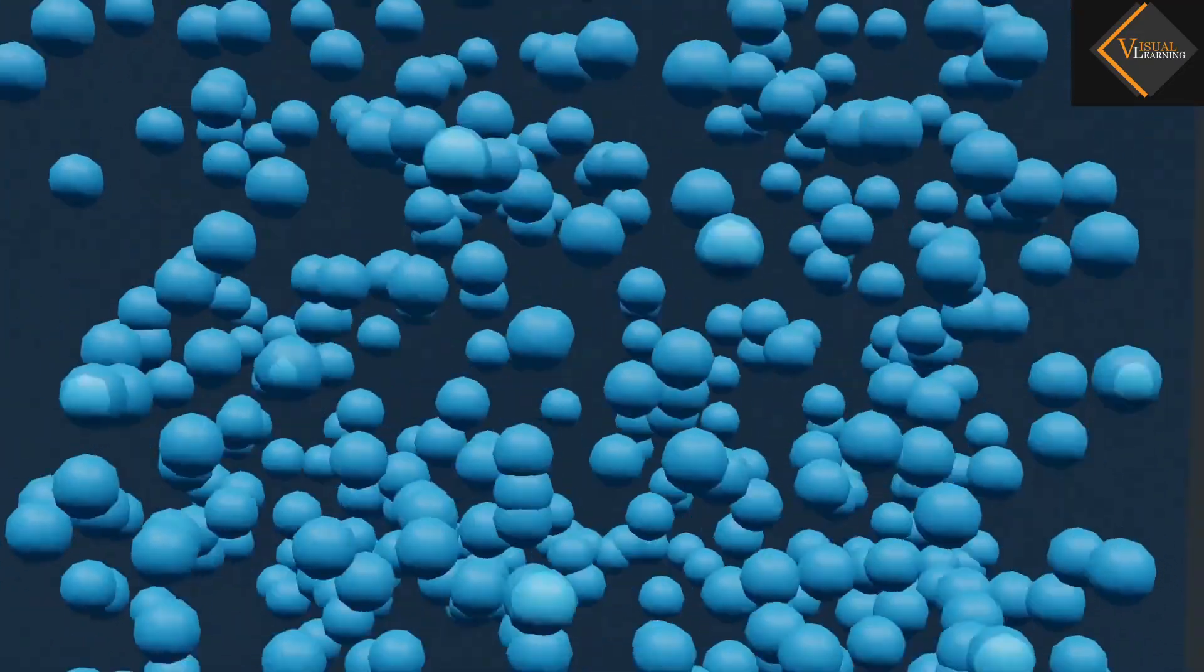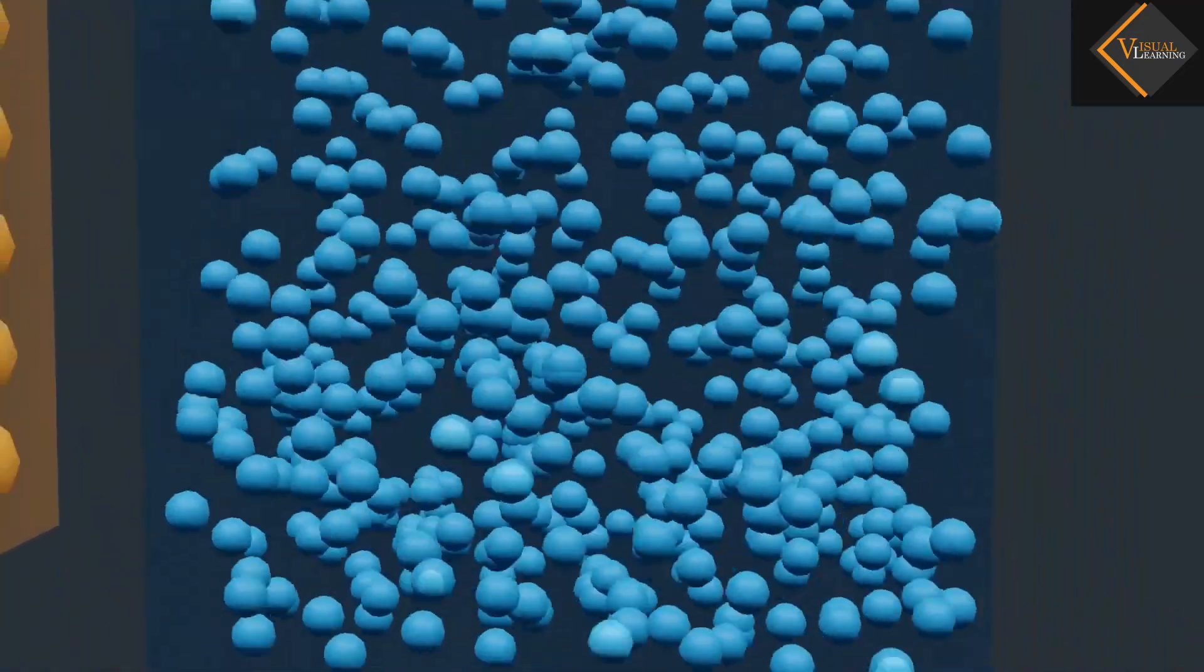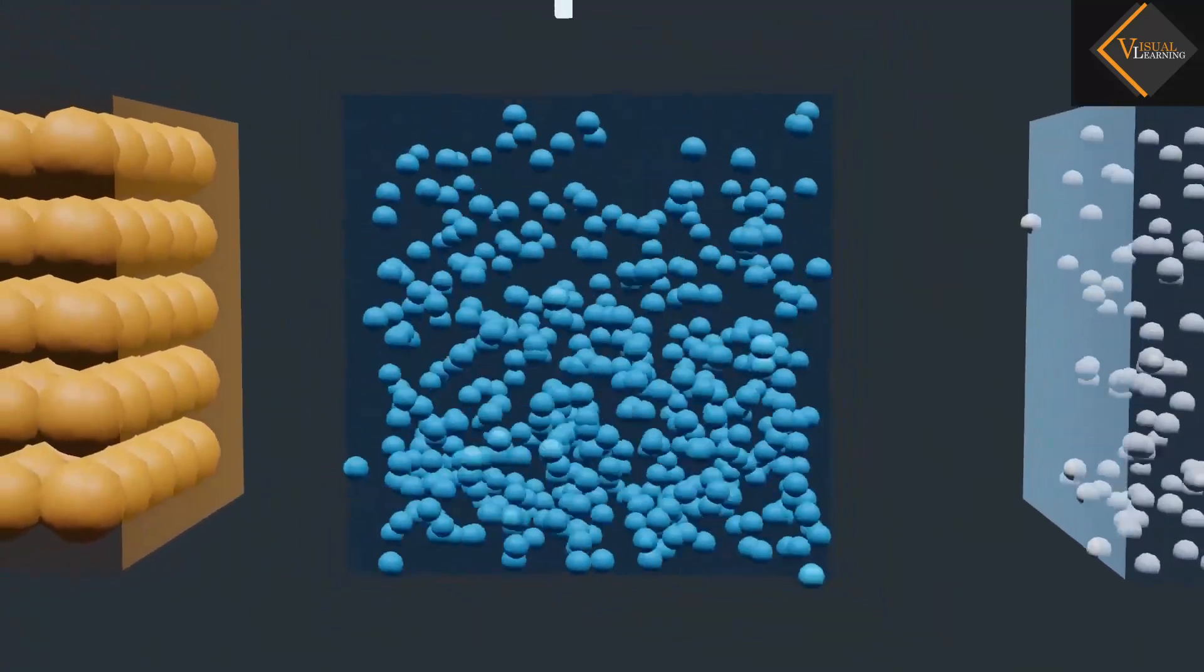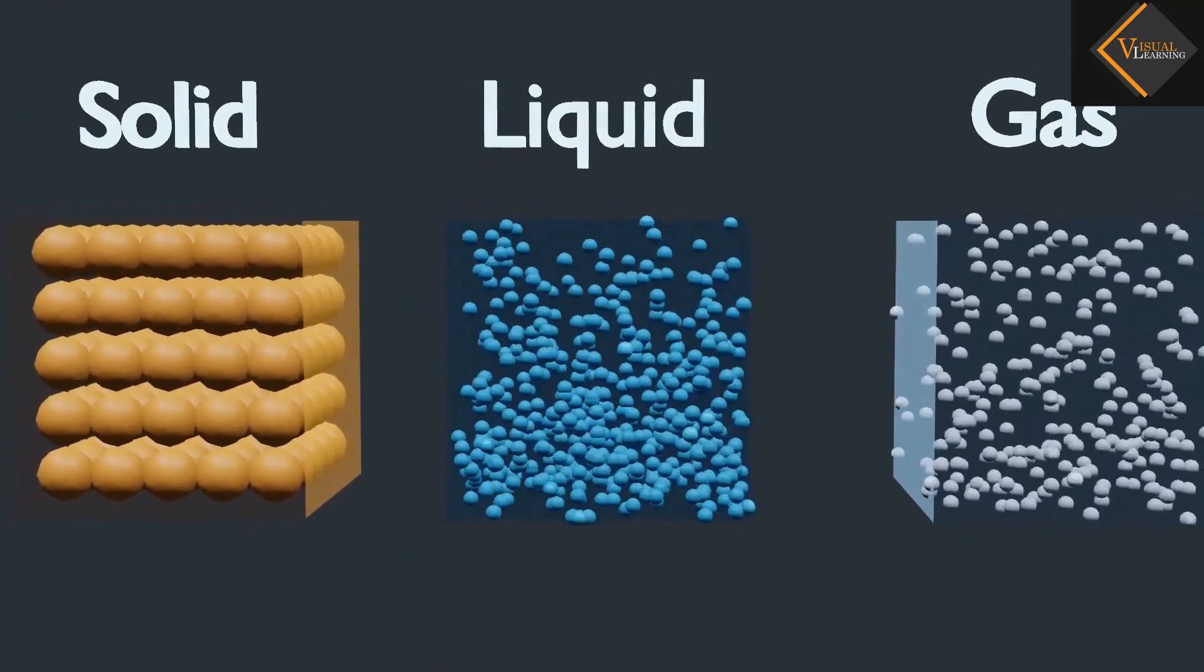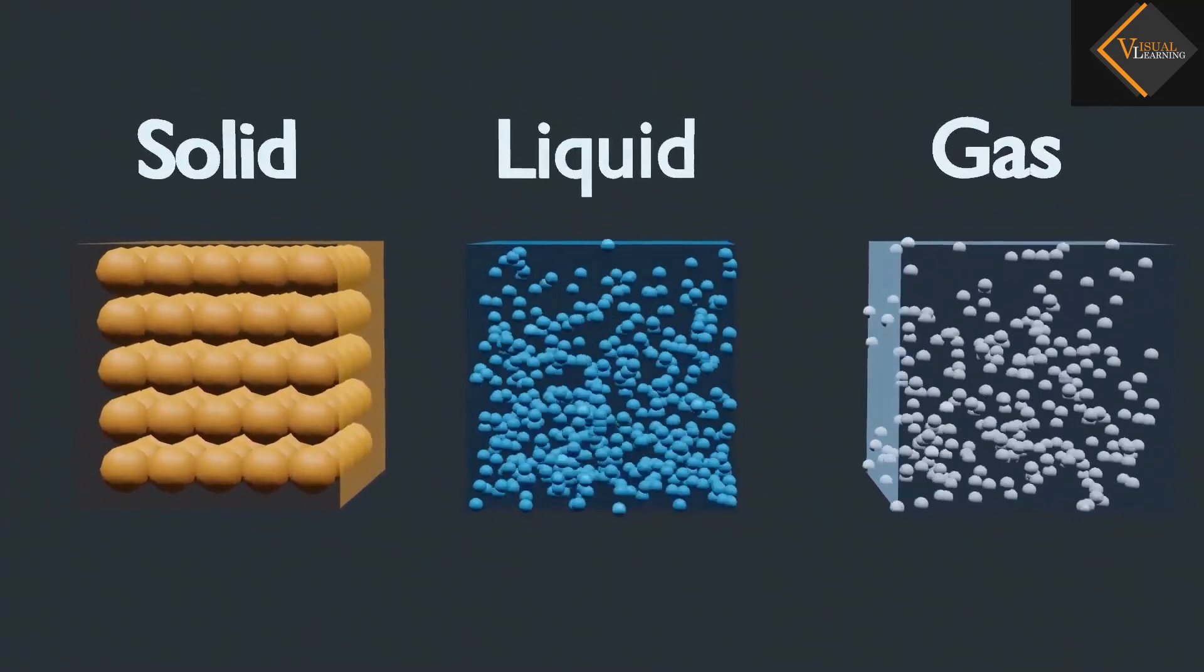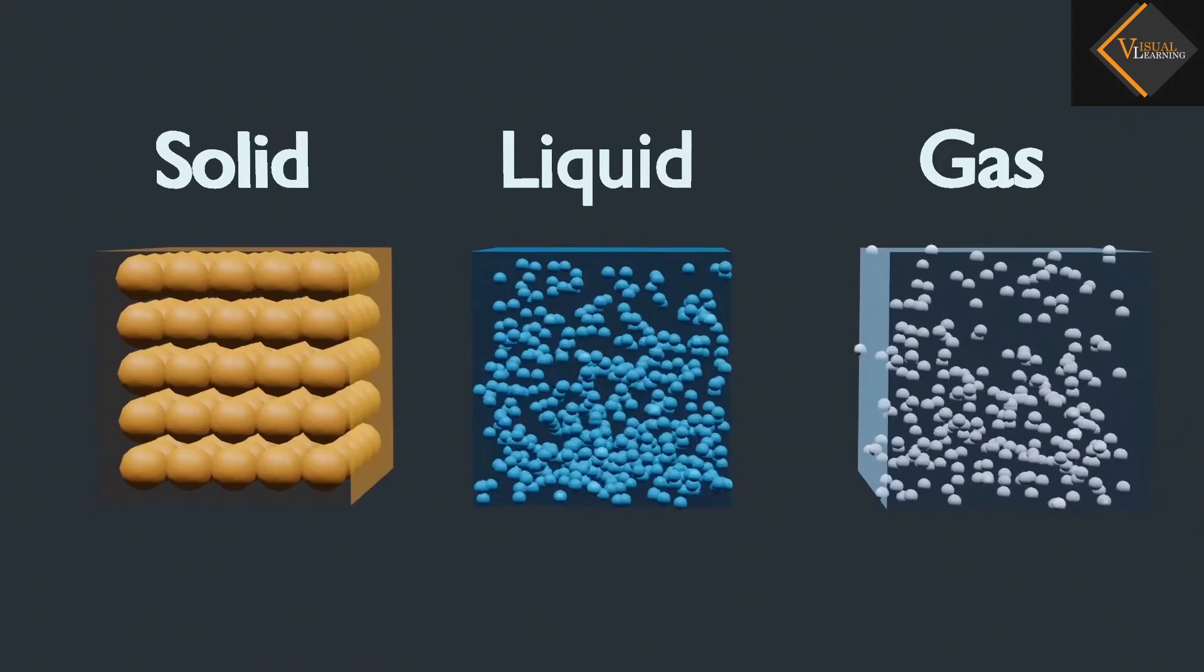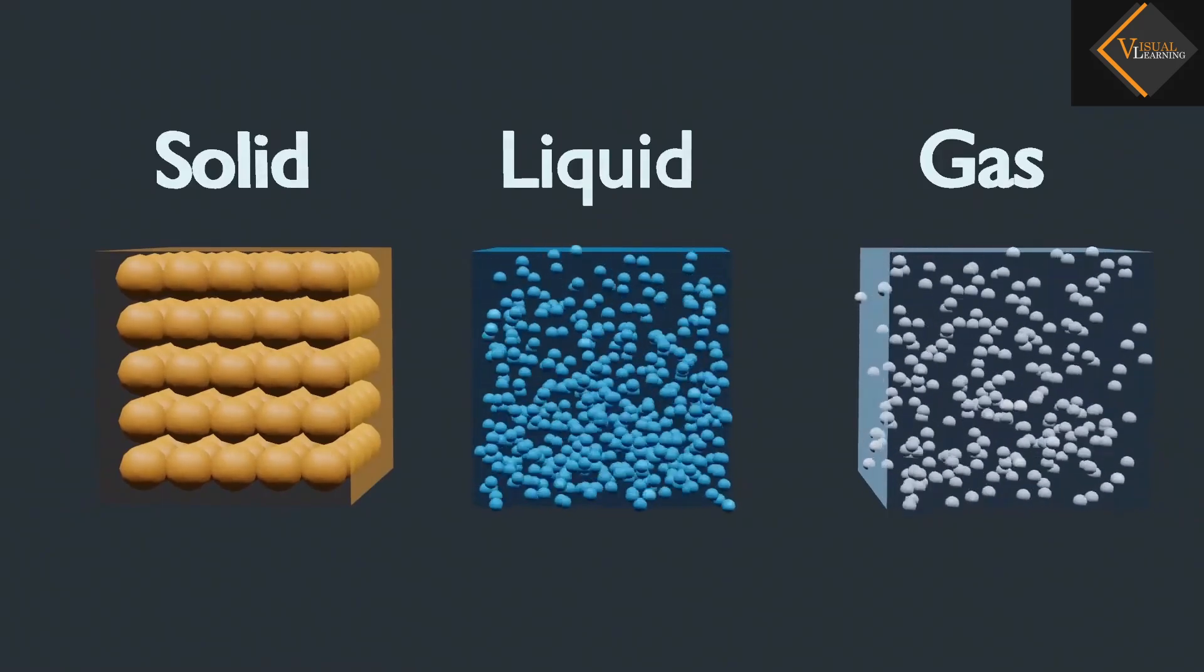As we said, everything is made of atoms, but there are different atoms in different matter. Different substances have different properties because they are made up of atoms which can be arranged in different configurations.